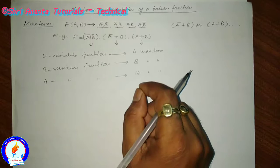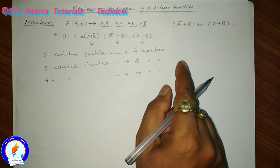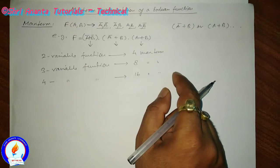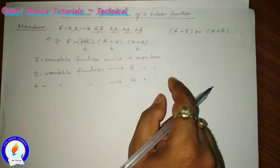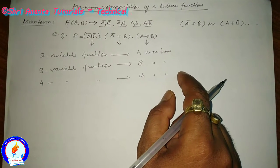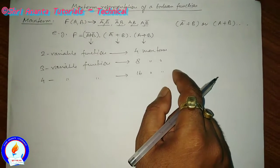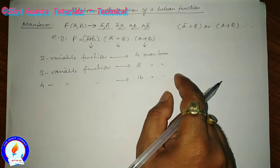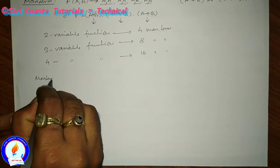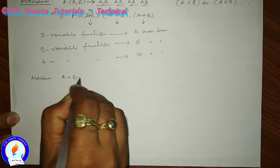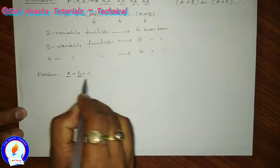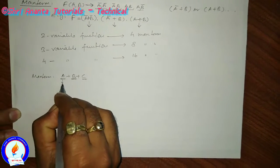Each max term can be obtained by the OR operation of all the variables of the function. In a max term, a variable appears in uncomplemented form if it possesses the value 0 in the corresponding combination, or in complemented form if it contains the value 1. So, in case of a max term, the uncomplemented variable possesses value 0.